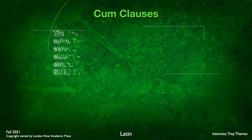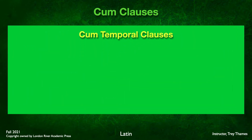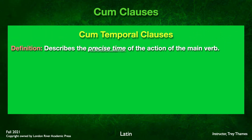Let's go ahead and look at cum clauses. As a reminder, we have already seen cum primarily used as a preposition — we translate it as the word 'with' — but cum clauses is going to be a bit different. The definition of a cum clause is the use of cum as a conjunction, not a preposition. It will be introducing a subordinate clause which describes an action connected in one way or another with the main clause.